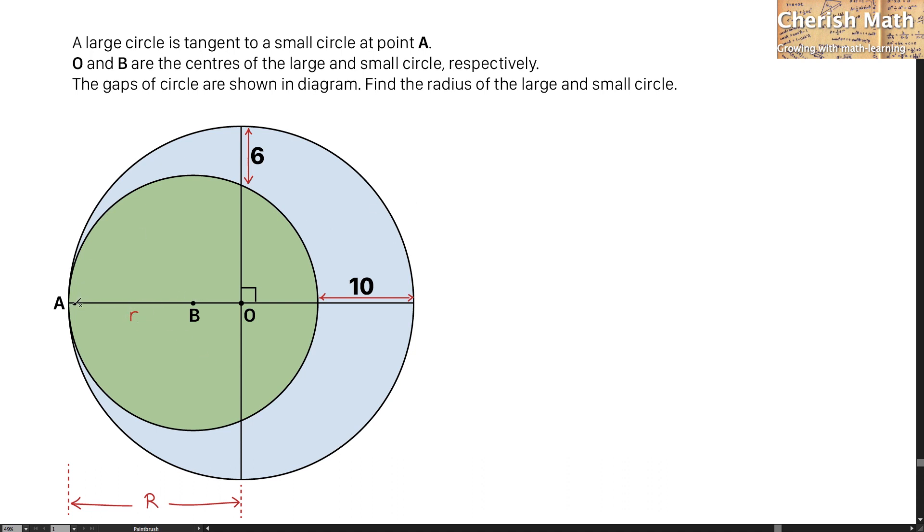When I use the diameter of the large circle minus the diameter of the smaller circle, that is producing 10 units.